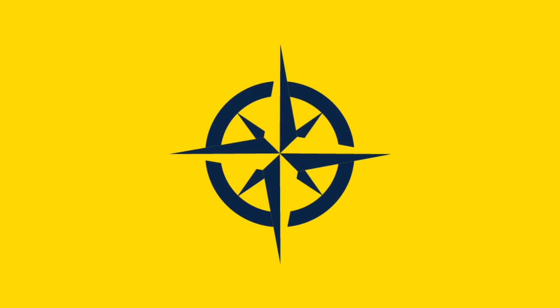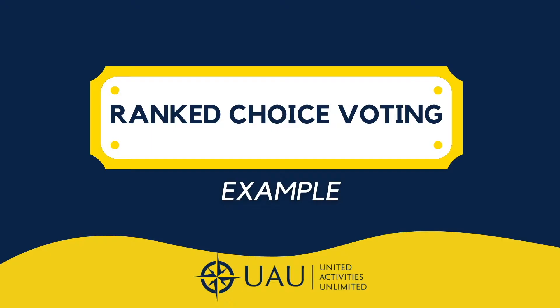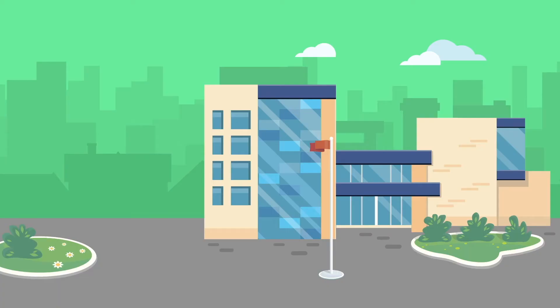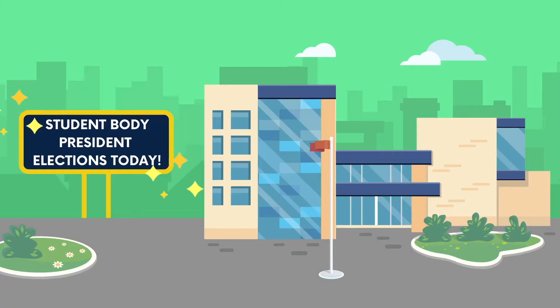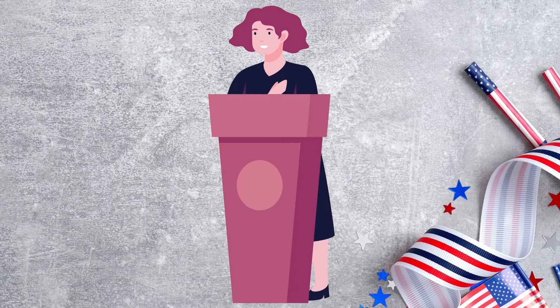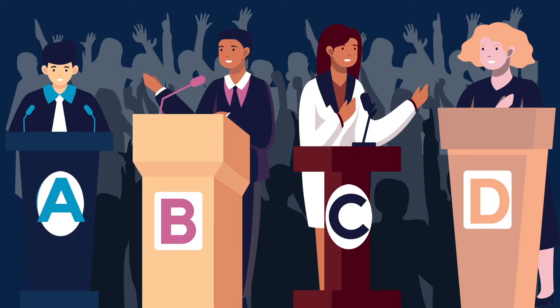In this video, we're going to give you an example of how ranked choice voting works. Let's pretend that in your high school, you have four candidates running for student body president: Alex, Brian, Cassie, and Denise. All four of them are up for the election.